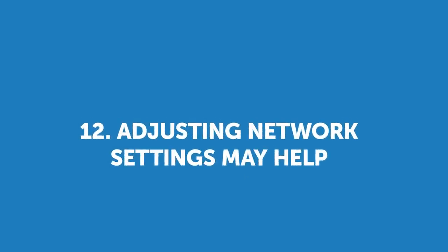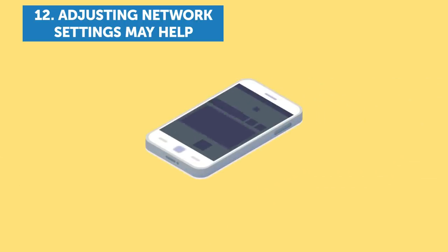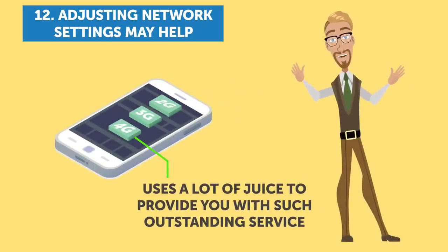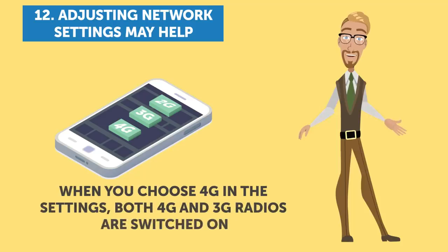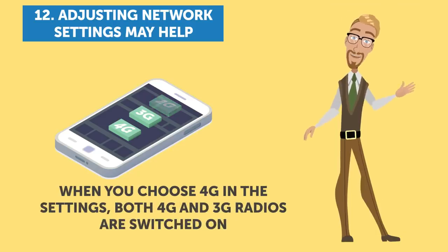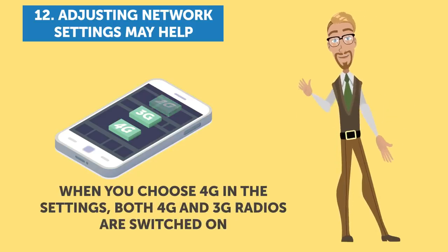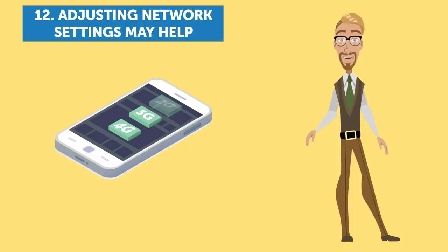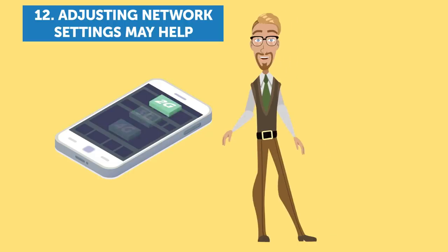12. Adjusting Network Settings May Help. When given a choice between 2, 3, and 4G, we all of course go for the biggest and best. Sure, 4G gives you a faster connection, but it uses a lot of juice to provide you with such outstanding service. When you choose 4G in the settings, both 4G and 3G radios are turned on, which is why your phone loses charge two times faster. So if you really need to save the battery, turn off 4G, or even 3G, and go with 2G instead.